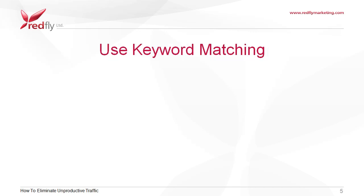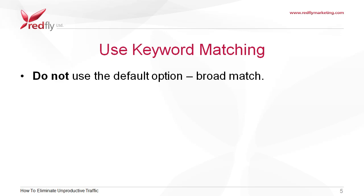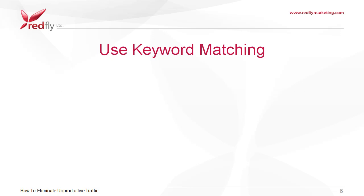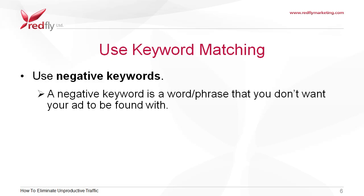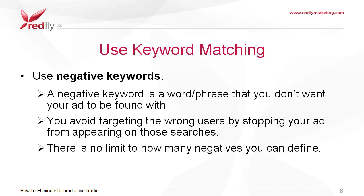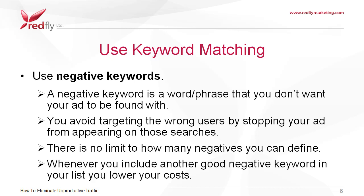Use keyword matching options to determine which Google searches can trigger your ads to appear. Do not use the default option broad match. Do combine broad match keywords with negative match keywords. A negative keyword is a word or phrase that you don't want your ad to be found with. By using negative keywords you can avoid targeting the wrong users by stopping your ad from appearing on those searches. There is no limit to how many negatives you can define, and whenever you include another good negative keyword in your list, you lower your costs.